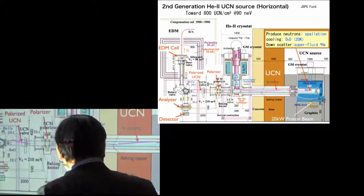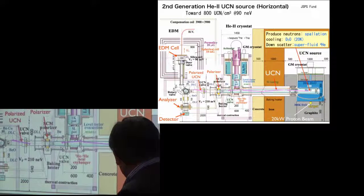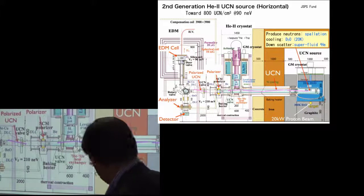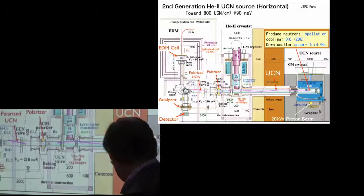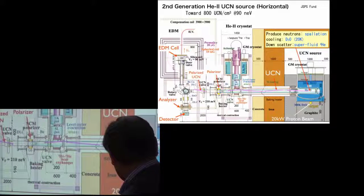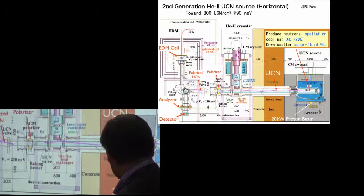And for the production of the ultra-cold neutron, we use a high-energy proton beam irradiated to the tungsten target. And using the spallation reaction, the neutron is produced.